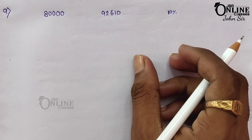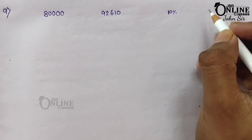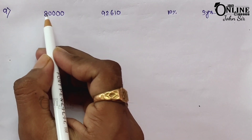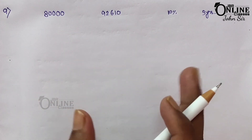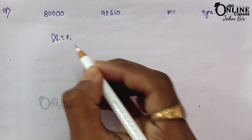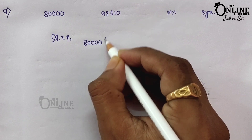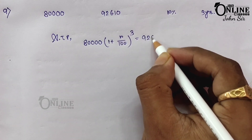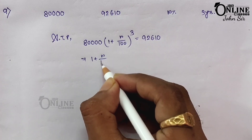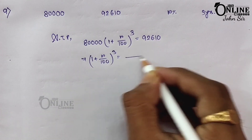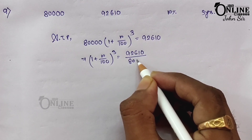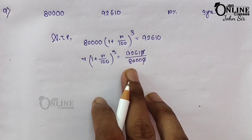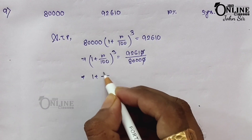In three years the production of the car goes from 80,000 to 92,610. So according to the problem: 80,000 × (1 + r/100)³ = 92,610. From that, (1 + r/100)³ = 92,610 ÷ 80,000. Cancelling zeros: 9261 ÷ 8000. Now, 8 = 2³, so 8000 = 20³, and 9261 = 21³.